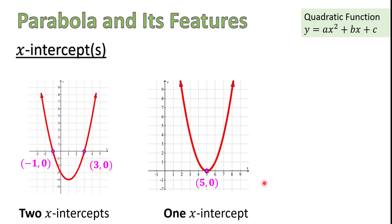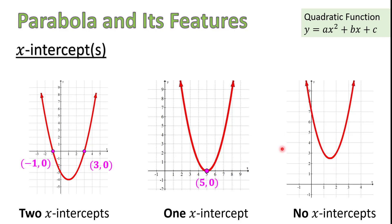Finally, a parabola may be positioned such that there are no x-intercepts. For example, if it's an upward parabola entirely above the x-axis, it won't cross the x-axis at all. Similarly, a downward parabola entirely below the x-axis will also have no x-intercepts. So these are the three cases: two x-intercepts, one x-intercept, or no x-intercepts. And notice that for all x-intercepts, since those points sit on the x-axis, their y-coordinates are always zero.